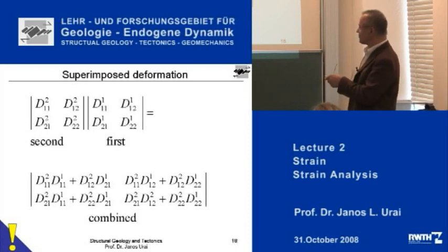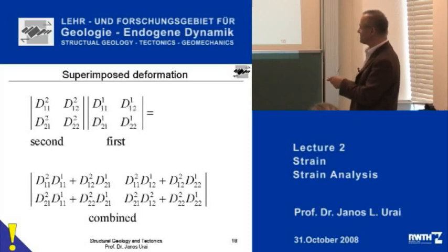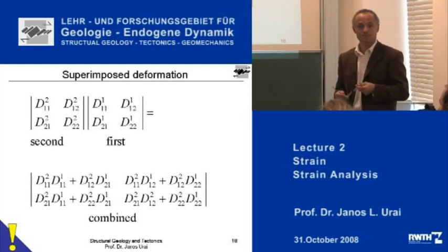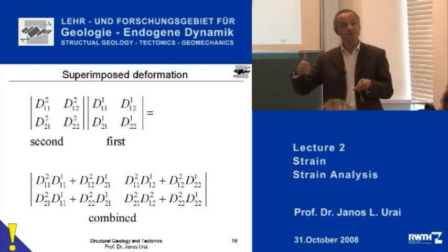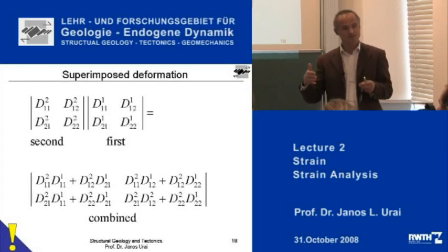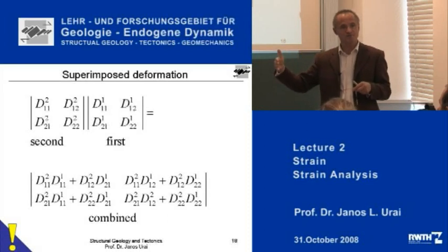The combined matrix has its one-one component made out of these four, its one-two component made out of these, its two-one component made out of these, and its two-two component made out of these. And of course you can do this an infinite number of times — you multiply the matrices and you can deform your ellipse into all kinds of shapes. At any point you can come back to the original.